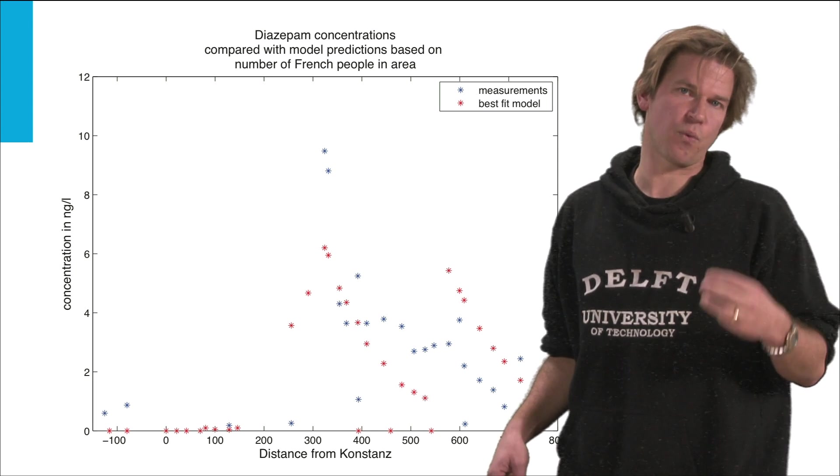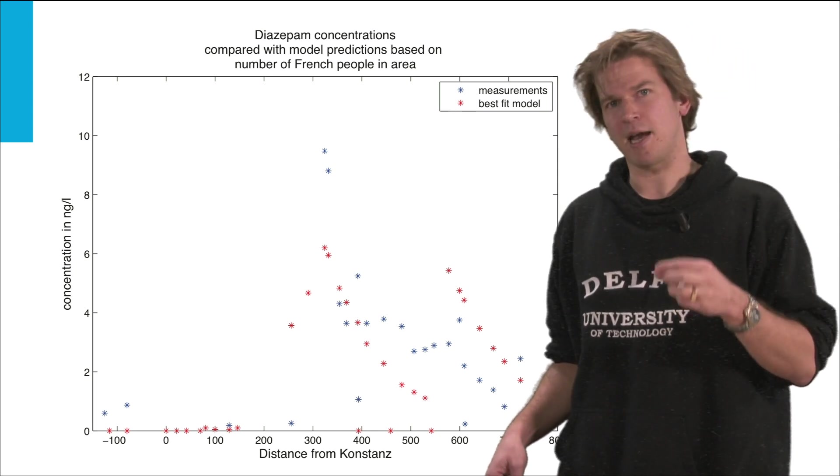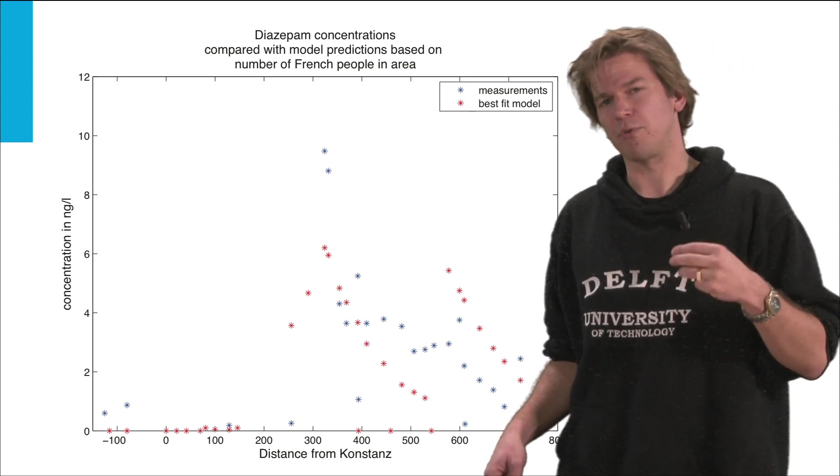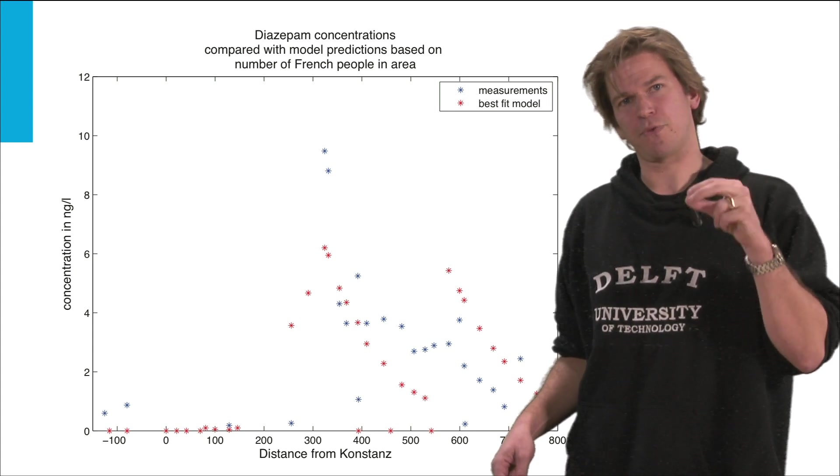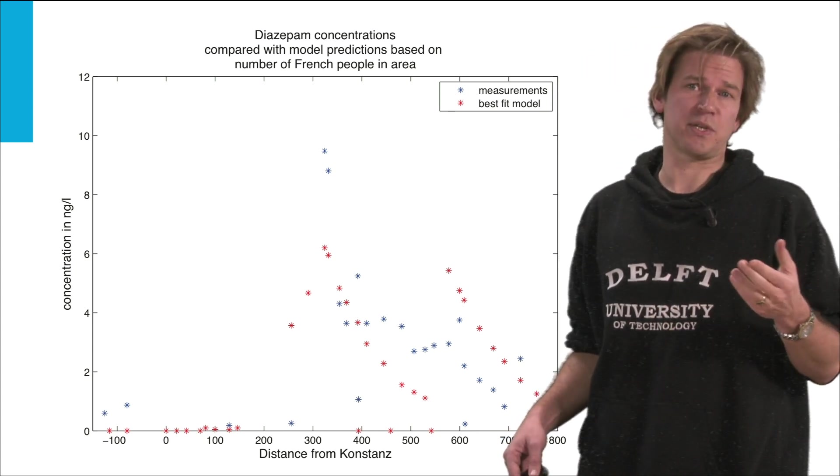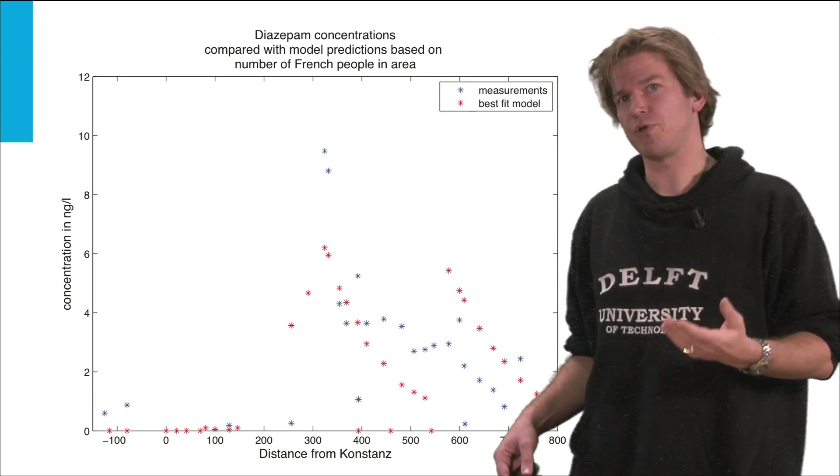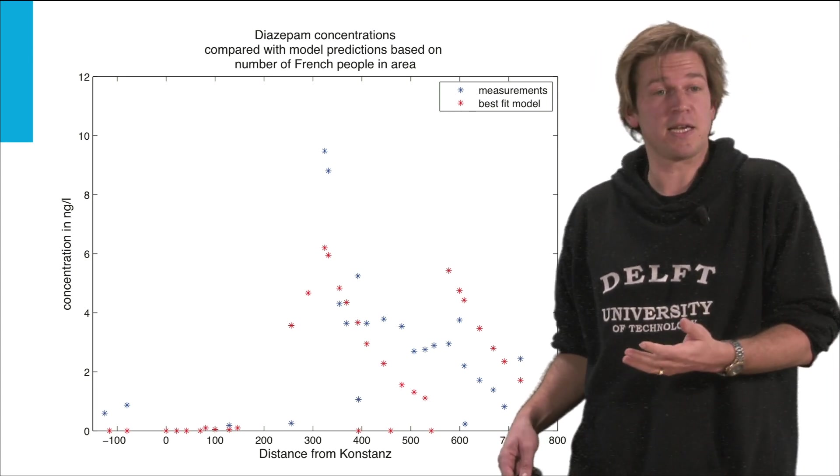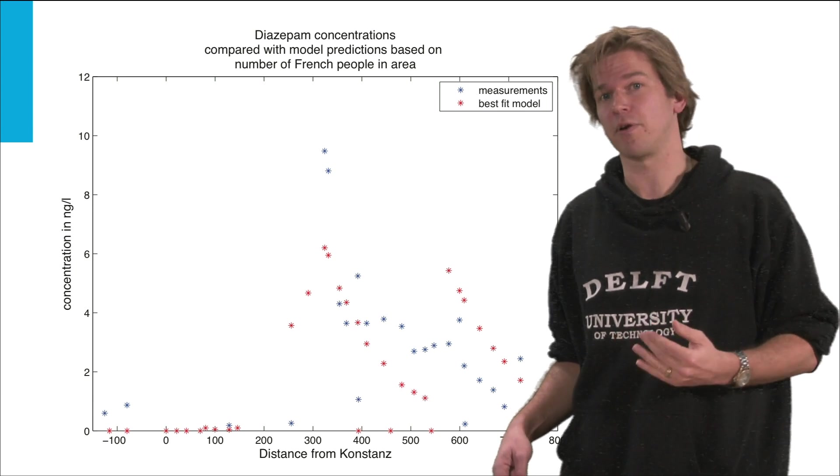So using the logic of watersheds we could explain how different demographic groups are responsible for different pharmaceuticals in river Rhine. That's very important to us since we need to know what is the cause of the pollution of a major river that in the end is a major source for drinking water in the Netherlands.